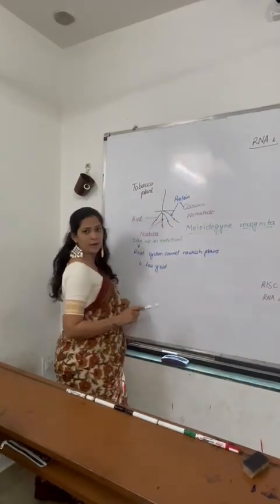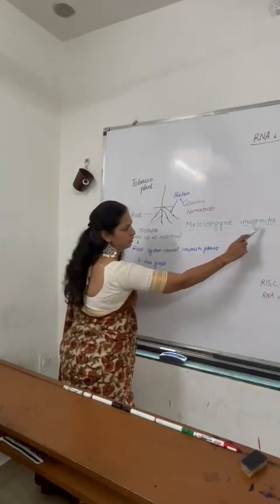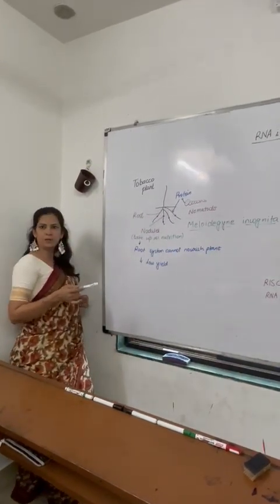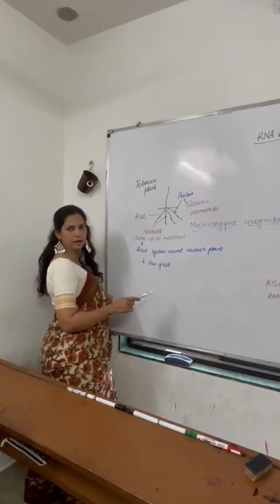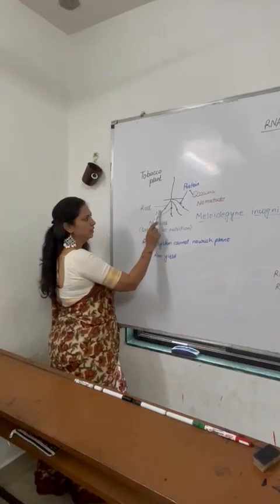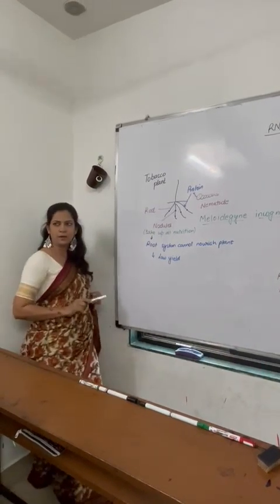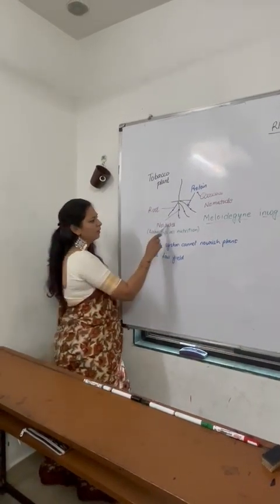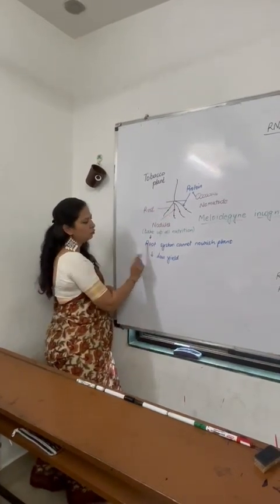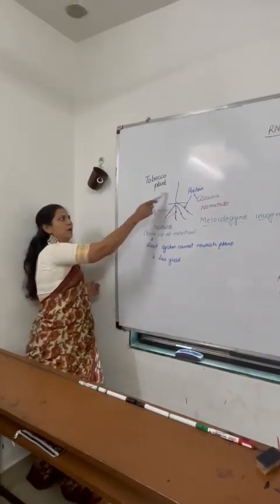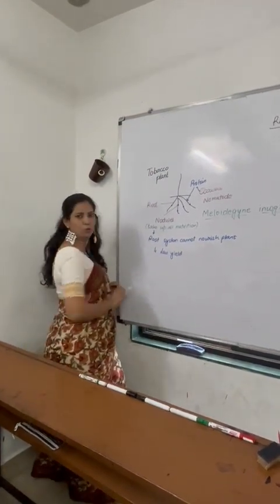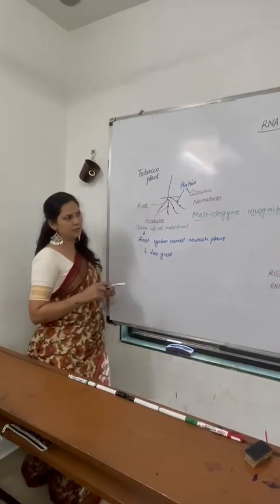There is a nematode called Meloidogyne incognita. This nematode leads to the formation of nodules in the root system of the tobacco plant. This nematode consumes all the nutrients, so the root system will not nourish the tobacco plant. There is no nutrition in the tobacco plant, and yields are low. How can we handle this?